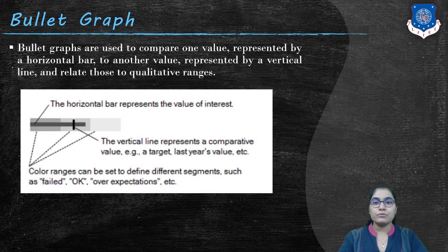Bullet graphs are used to compare one value which is represented by a horizontal bar to another value which is represented by a vertical line and relate to quantitative ranges. This vertical line represents a comparative value, for example a target, last year's value, or some goal. While the horizontal bar represents the value of interest or we can say the actual data.